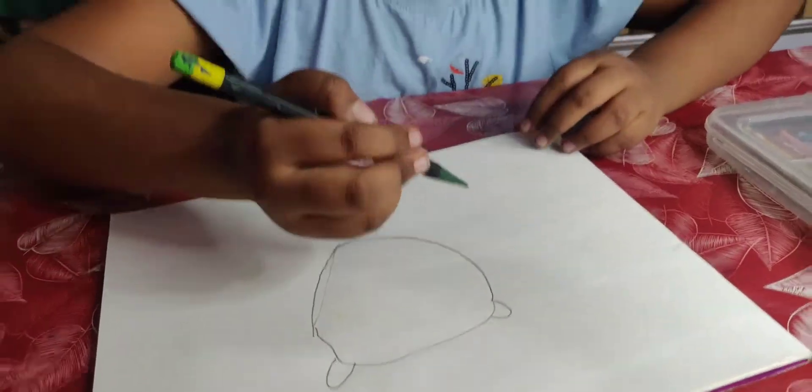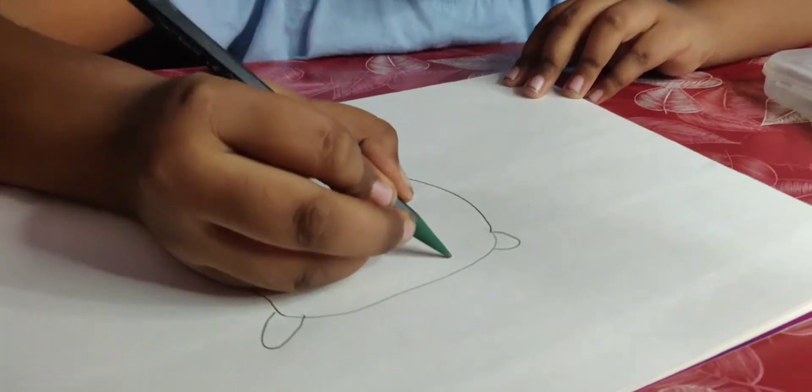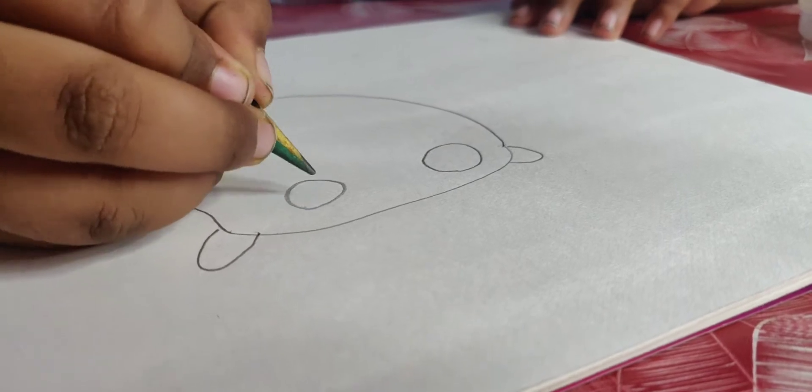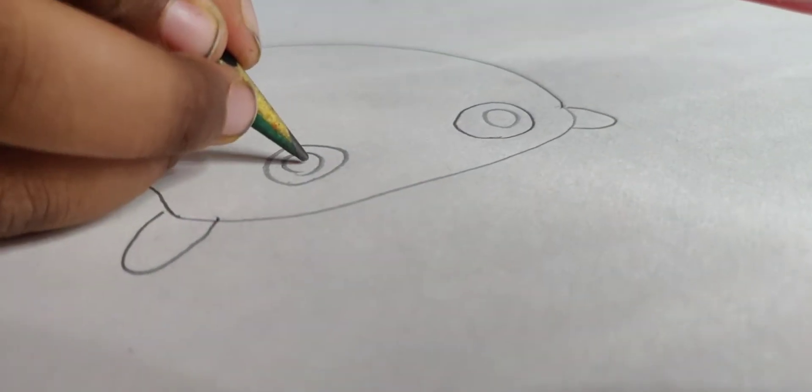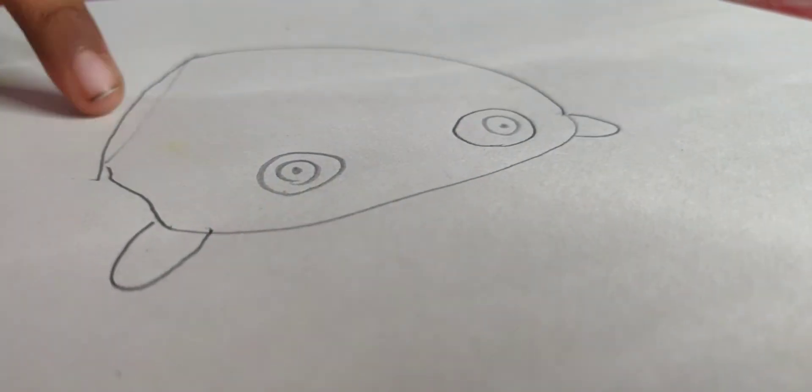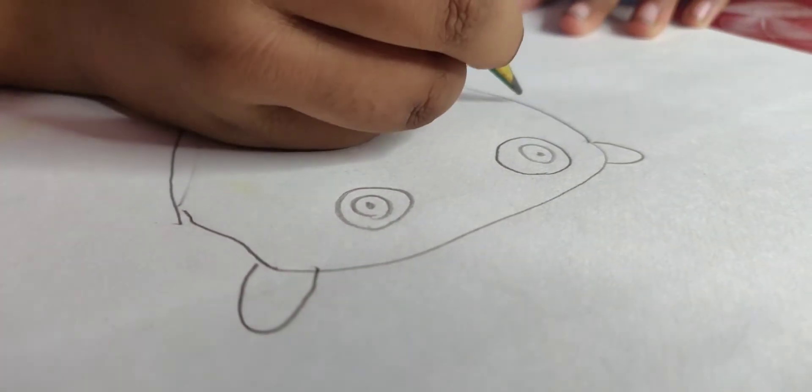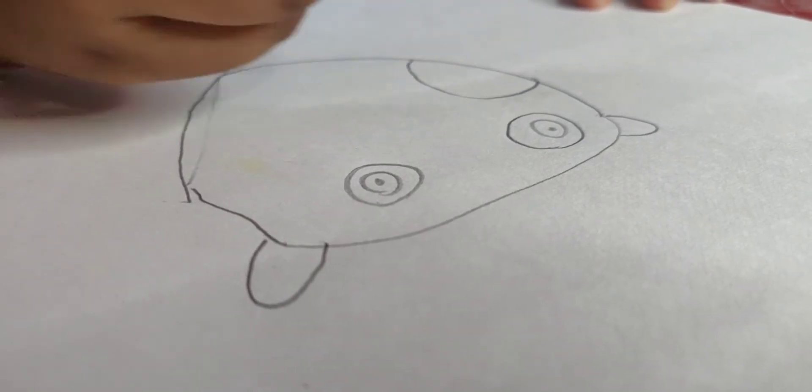Then we need to draw the eyes. First we need to do one big circle, two big circles, then a small circle. Then one little circle, then we need to do like this.